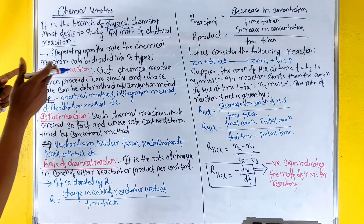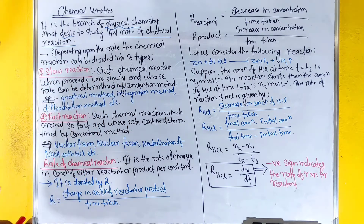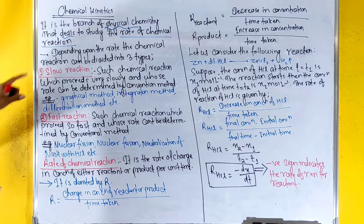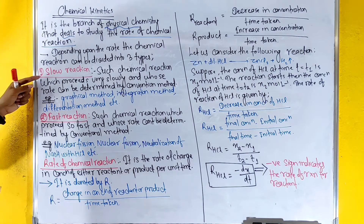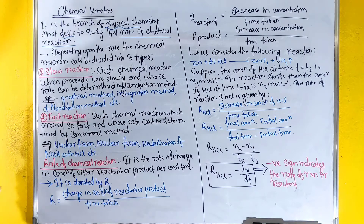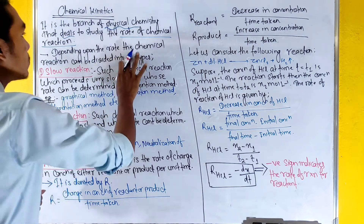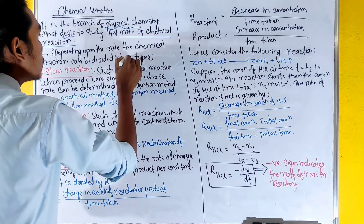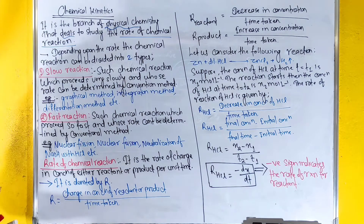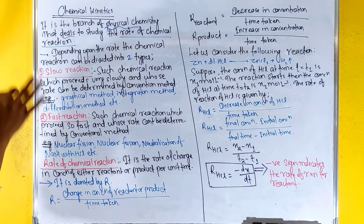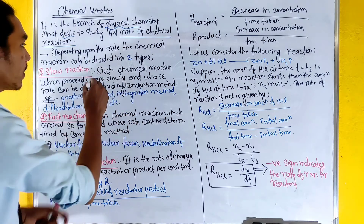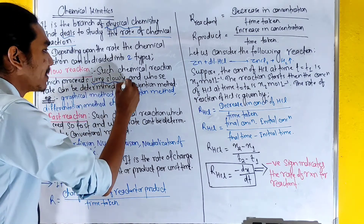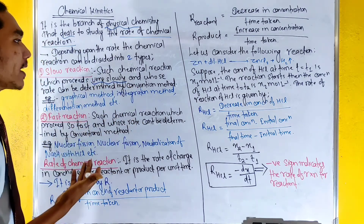Depending upon the rate, we can divide reactions into types. Reactions can be divided into slow reactions and fast reactions. Slow reactions are those chemical reactions which proceed very slowly.